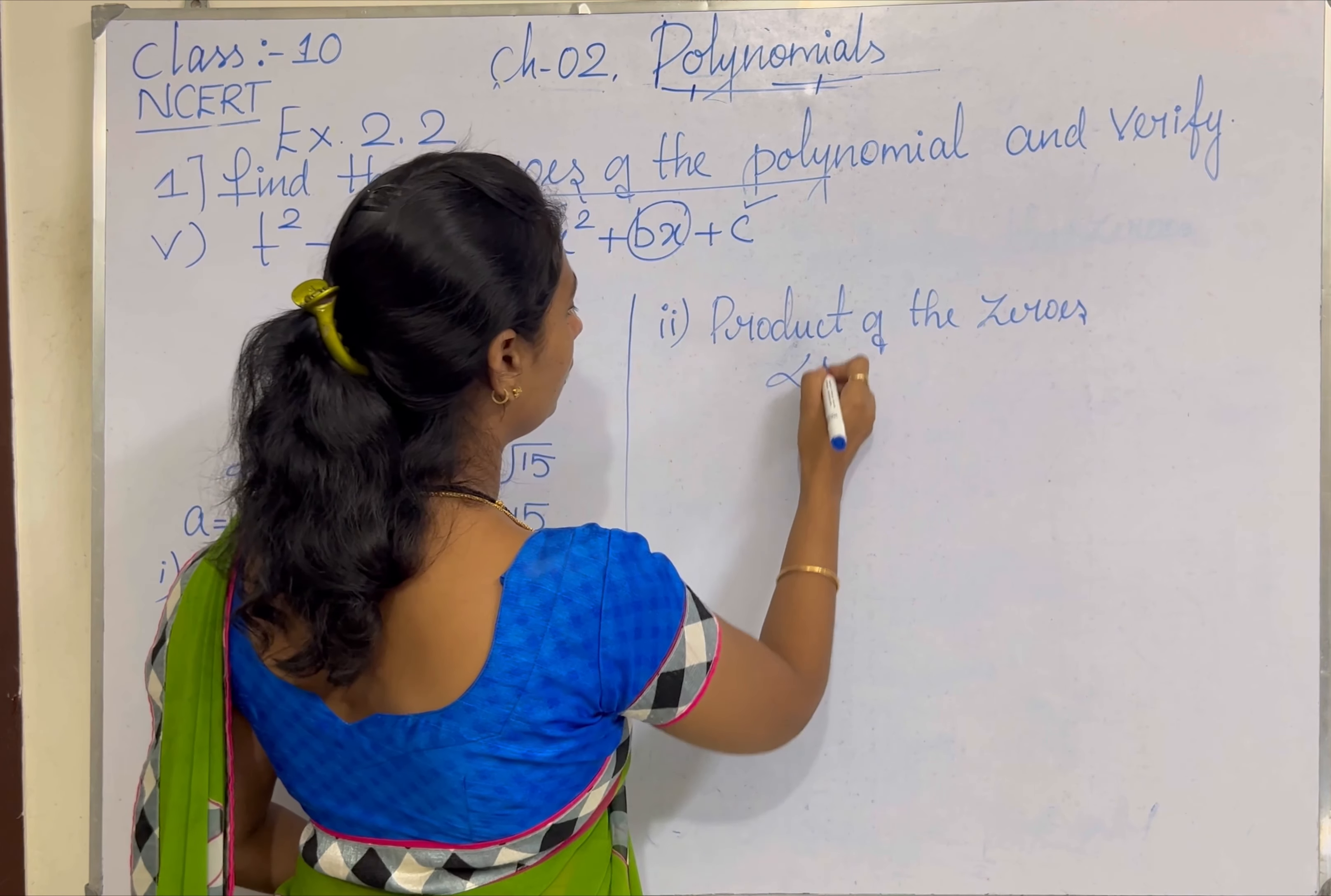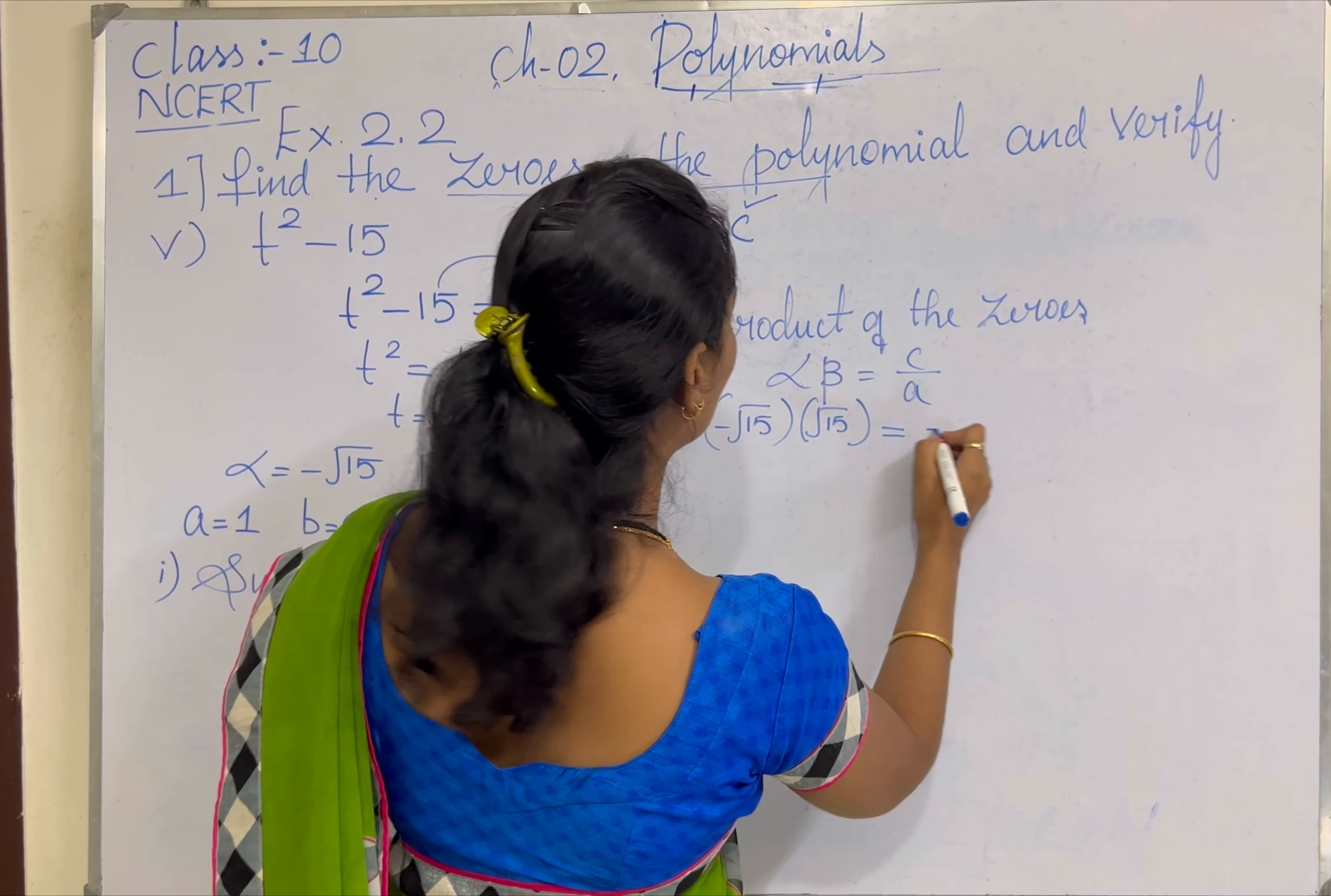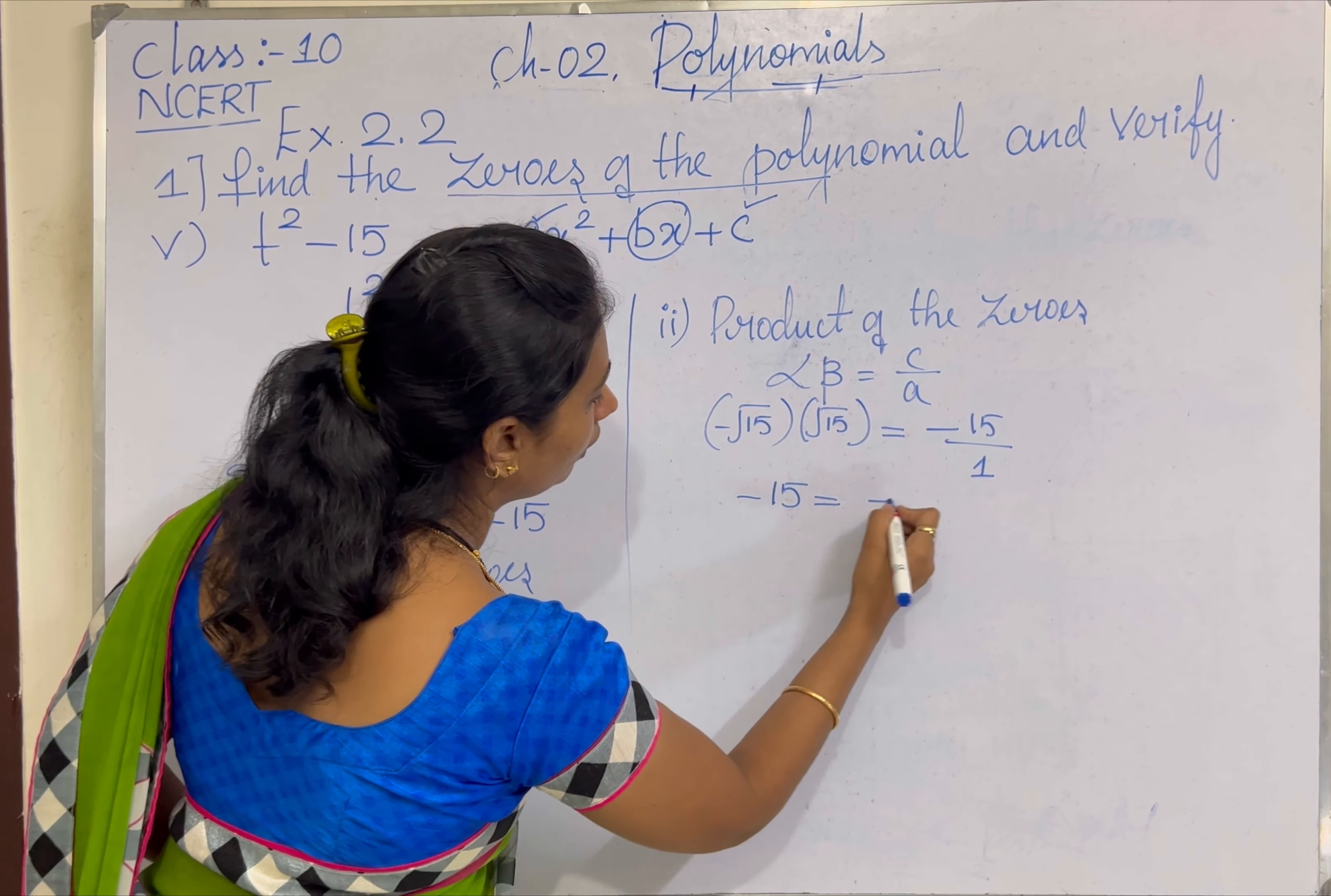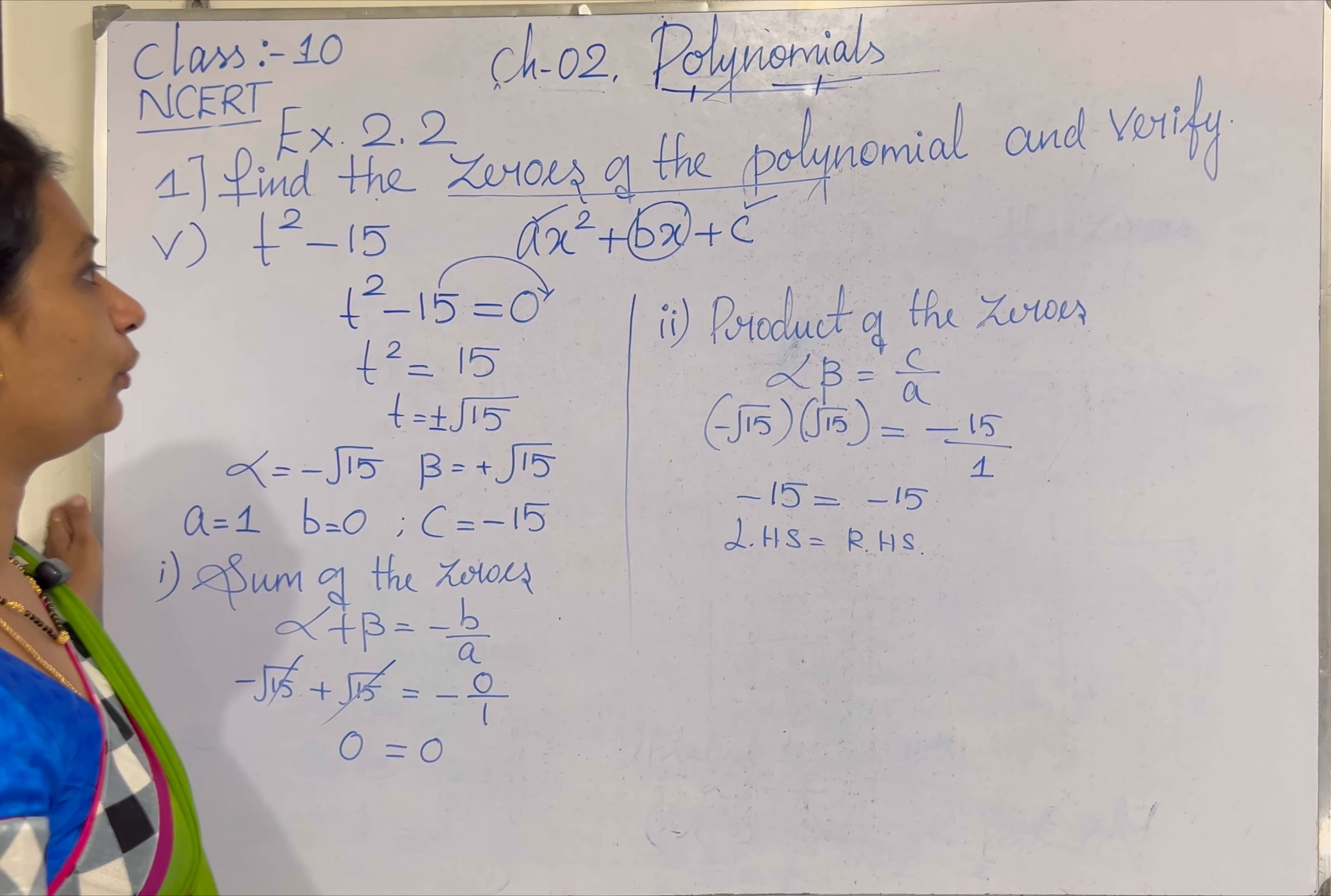Alpha beta equal to C by A. Multiplying minus root 15 into plus root 15 equal to C value minus 15 divided by A value 1. Minus root 15 into plus root 15 is minus 15. Minus 15 equal to minus 15. LHS is equal to RHS. Hence we have verified the relationship between the zeros of the polynomial and their coefficient.